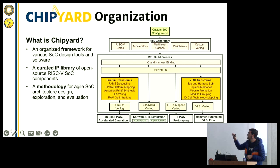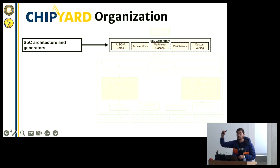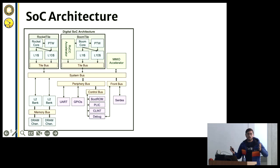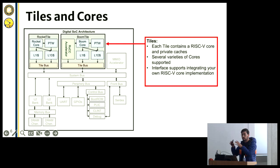Let's talk about RTL generators. What is a ChipYard SOC? Looking at the digital side, it's comprised of a bunch of different components. The first thing I'd like to highlight are the tiles — what we call the core and some other necessary components like a PTW or a cache. In this case, you have cores like Rocket and Boom. This is the replicatable set of processor IP that you can stamp out in your SOC. It's a fairly modular interface, so you can plug in your own cores.